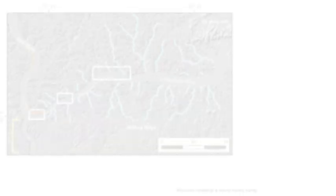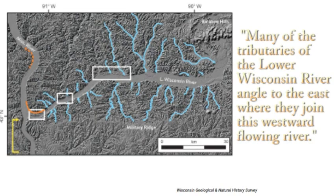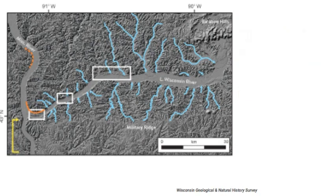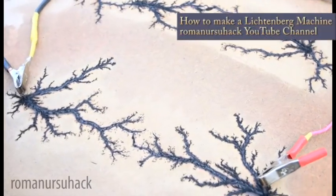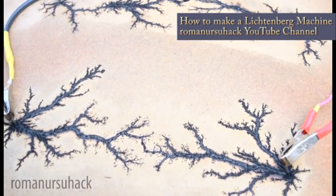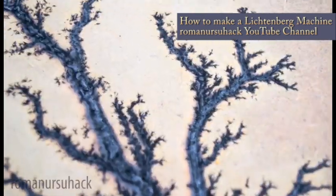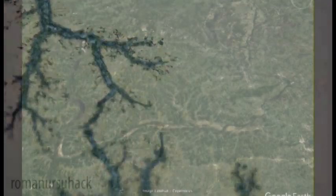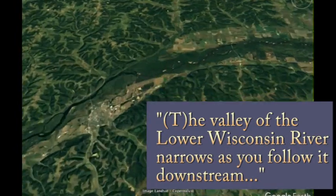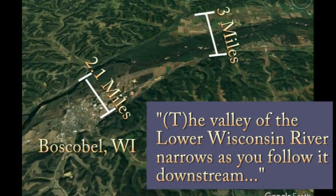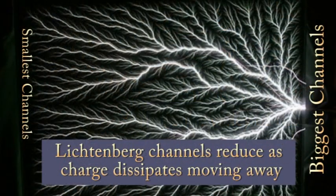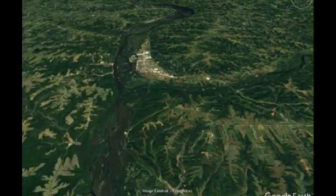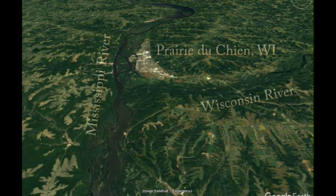The researchers also note four additional important data points. First, the author notes that many of the tributaries of the lower Wisconsin River angle to the east where they join this westward-flowing river. These tributaries are simply the arms of the electrically formed Lichtenberg figure, which will ever and always have an angular alignment to the current source. Second, the author notes that the valley of the lower Wisconsin River narrows as you follow it downstream. This too is a feature of the Lichtenberg figure, where the greatest extraction of electrons will occur not just at but around the anode, and the width of the current will reduce as it gets further from the source.